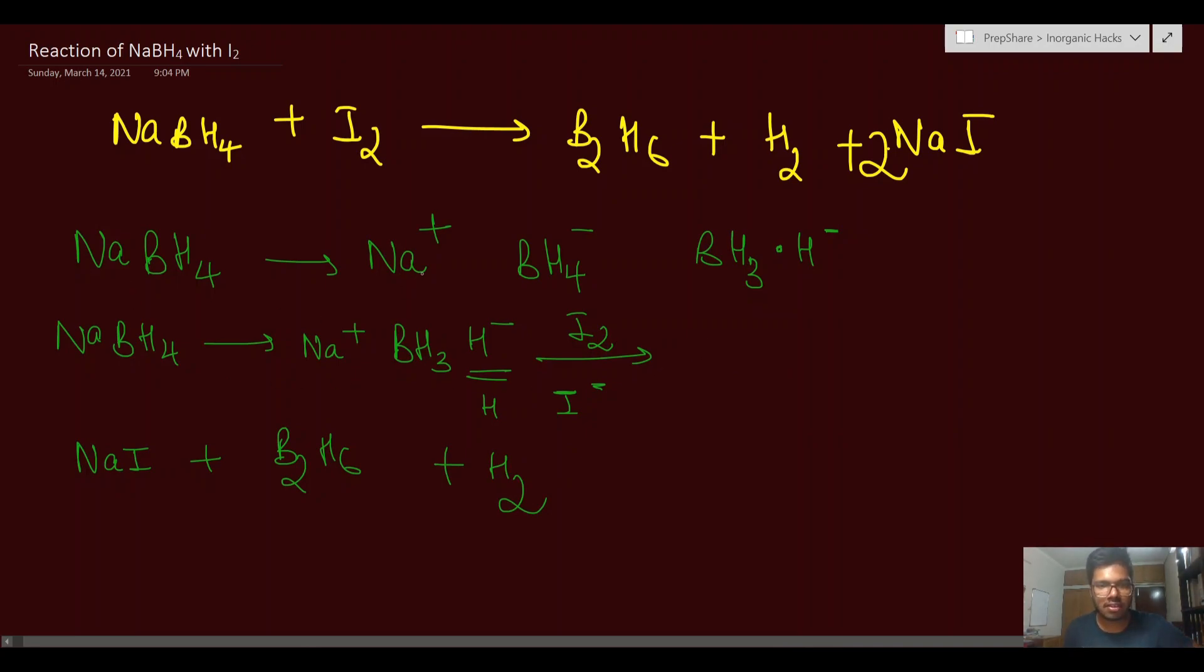So again, NaBH4 - think of it as an ionic compound: Na+ and BH4-. BH4- is H- coordinated to BH3, right? So NaBH4 we write as Na+, BH3, and H-. I2 will try to oxidize H- and take the negative charge. You will form H radicals and I-. Now you have Na+ and I-, so you get NaI.